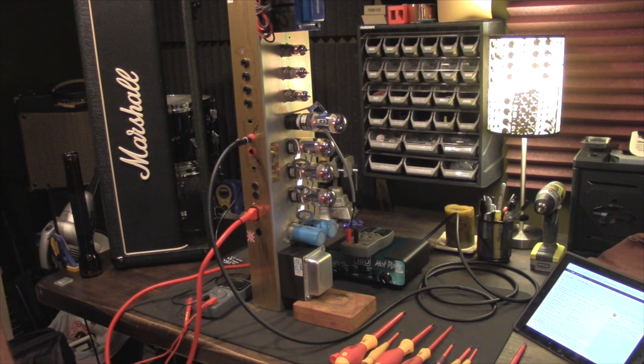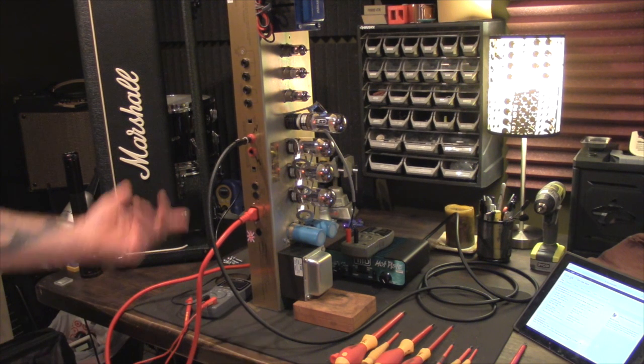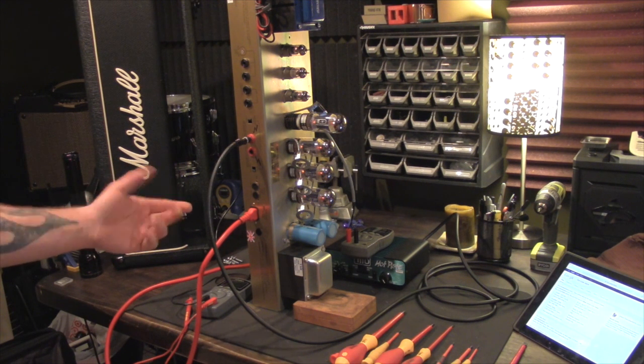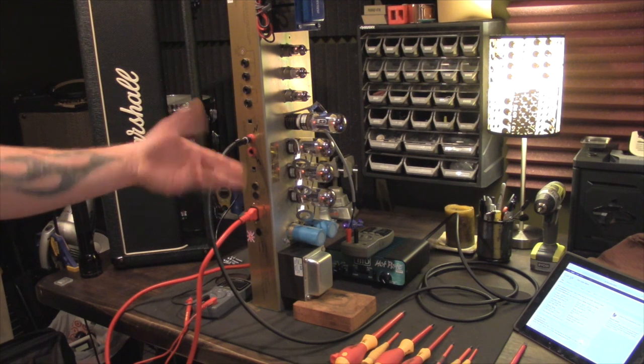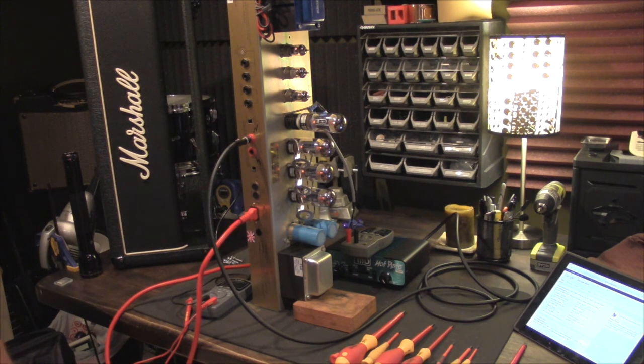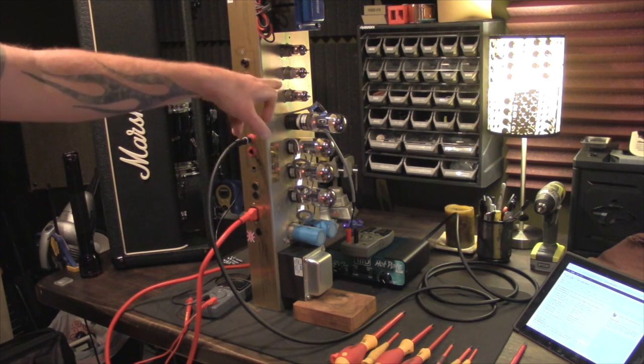I was making a tube change on this Marshall JCM-900. This is the 5881 series, 100 watt, with the 5881 power tubes and three 12AX7s.